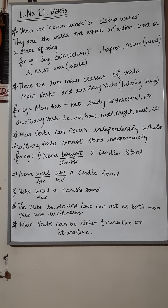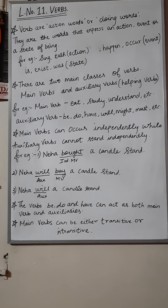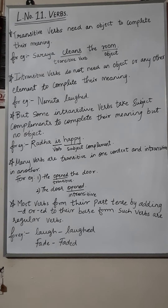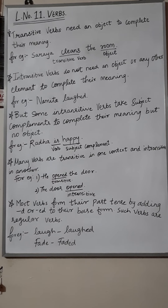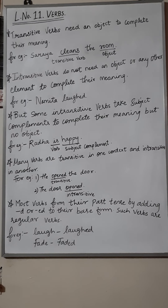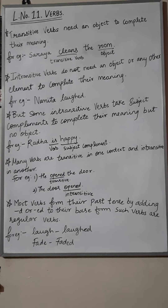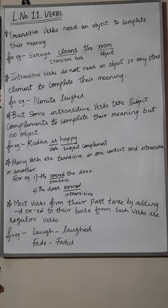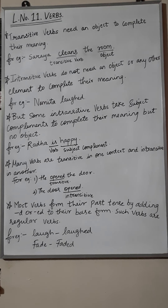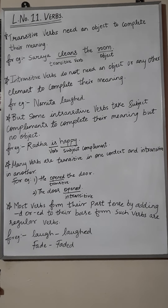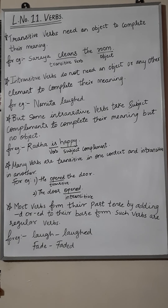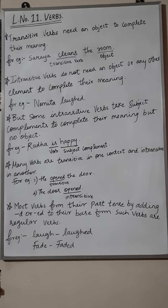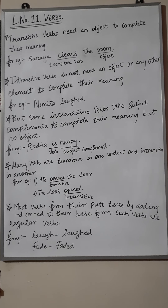Main verbs can be either transitive or intransitive. Transitive verbs need an object to complete their meaning. For example, 'Saraya cleans the room' — here 'cleans' is a transitive verb and 'room' is the object. Intransitive verbs do not need an object or any other element to complete their meaning. For example, 'Namita laughed' is a complete, meaningful sentence.